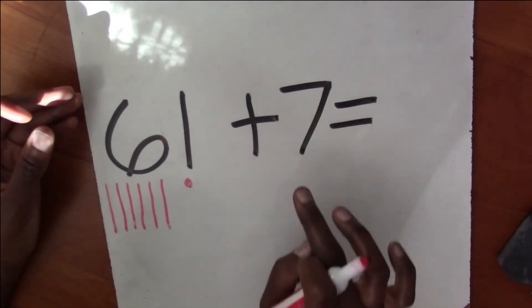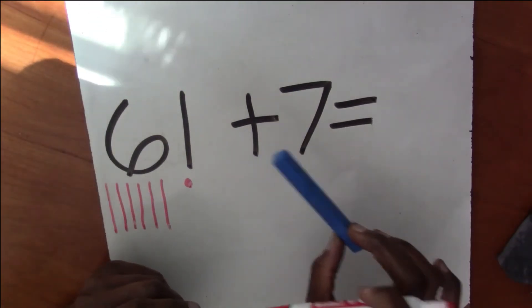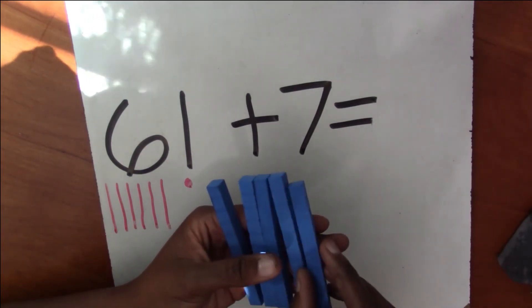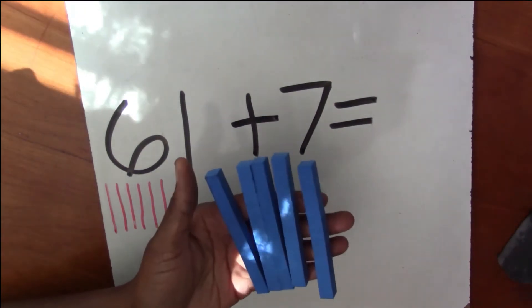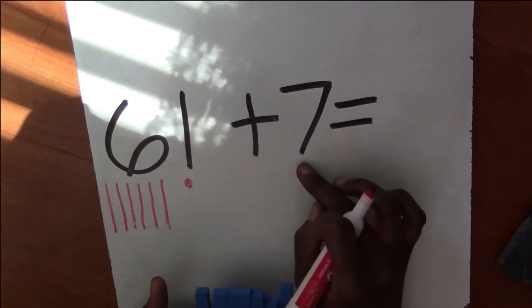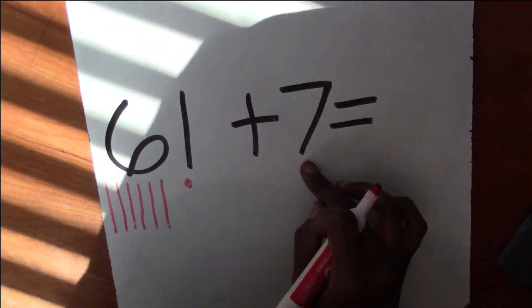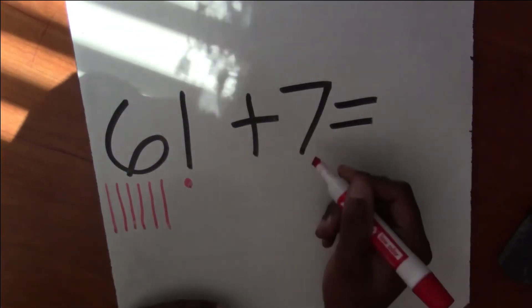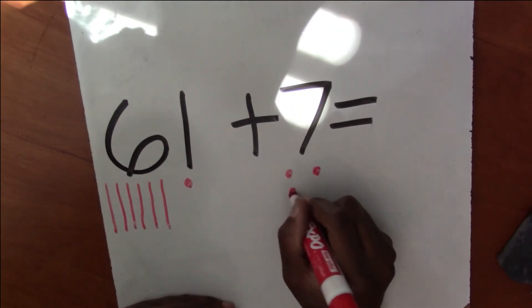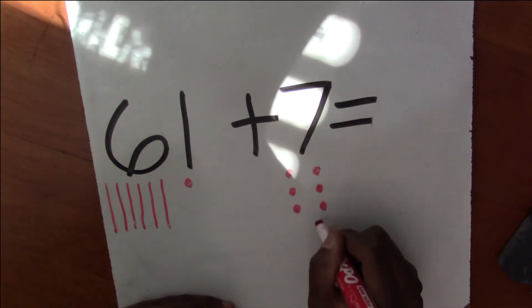Now I'm going to add seven ones to that. Because remember, this isn't 10s. If I were to have seven 10s, that would be 70. And that doesn't say 70, does it? No, that says seven. So we need to draw ones. I need to draw seven ones. 1, 2, 3, 4, 5, 6, 7.